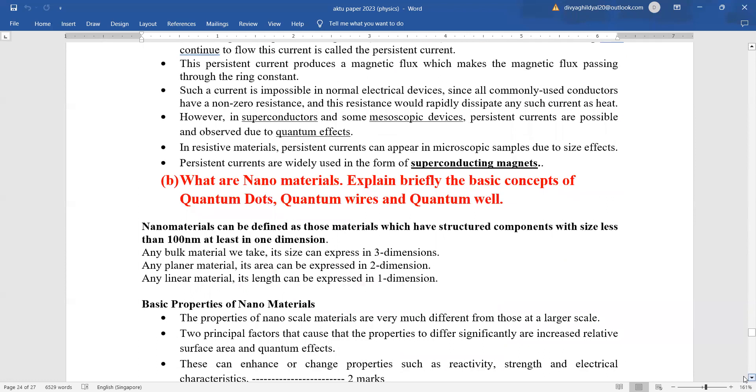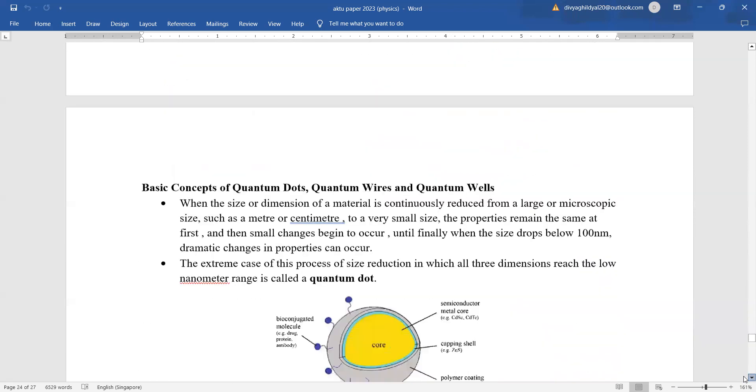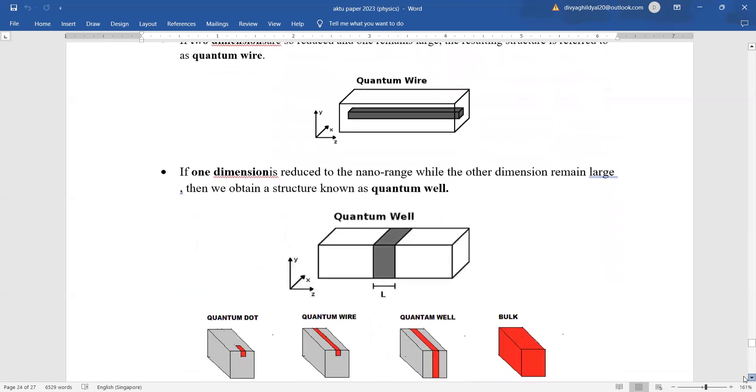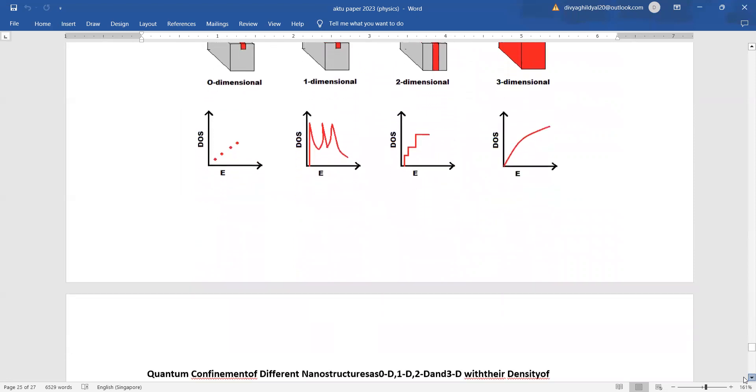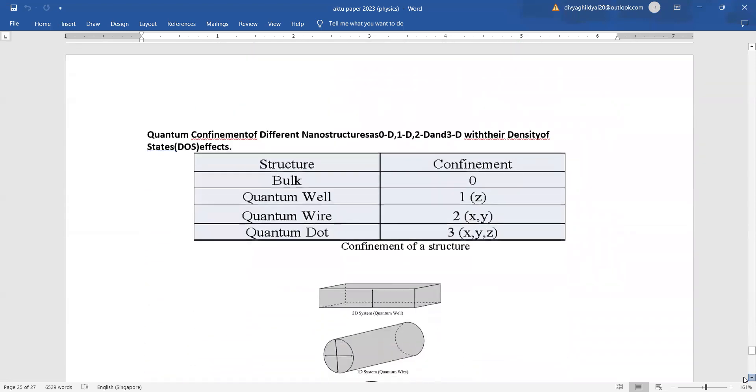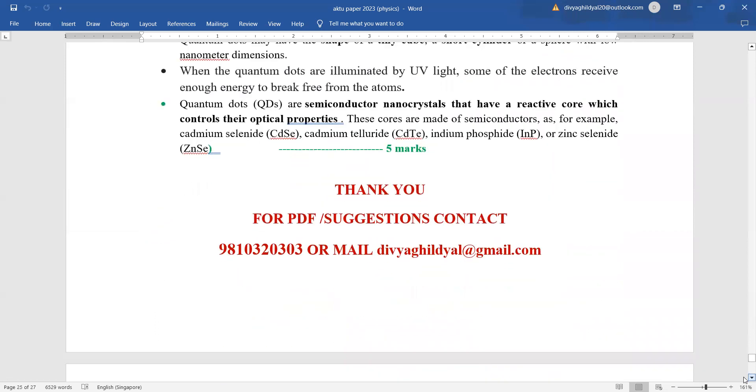What are nanomaterials? Nanomaterials can be defined as those materials which has subchart components with size less than 100 nanometer. Basic concept of quantum dot, quantum wire and quantum well. That is one dimensional, two dimensional and three dimensional. You can explain either this way: zero dimension, one dimension, two dimension, three dimension, mentioning their properties in detail. Just write a short note on their dimensional analysis: quantum dot, quantum wire and quantum well.